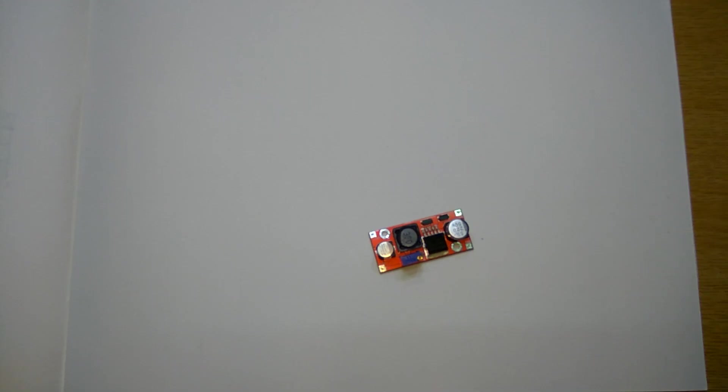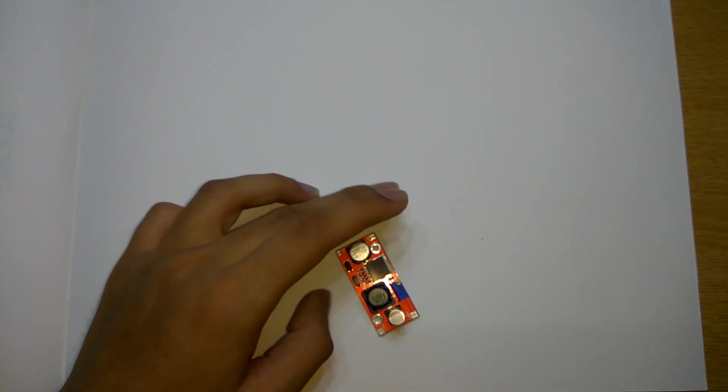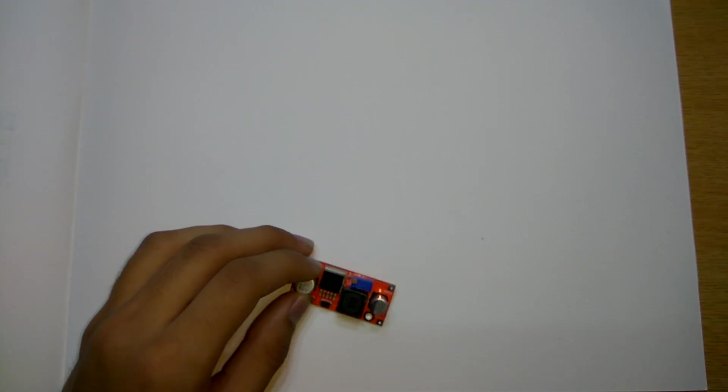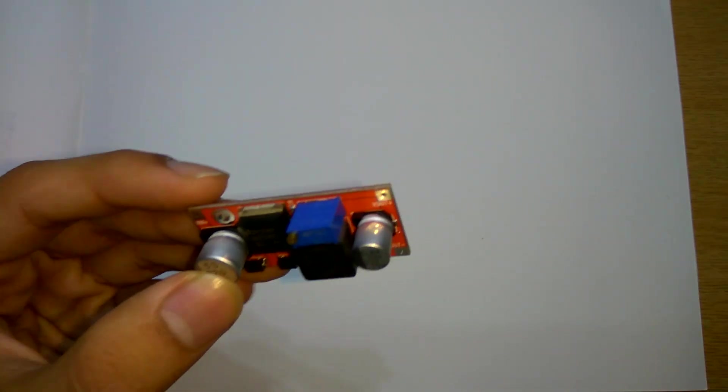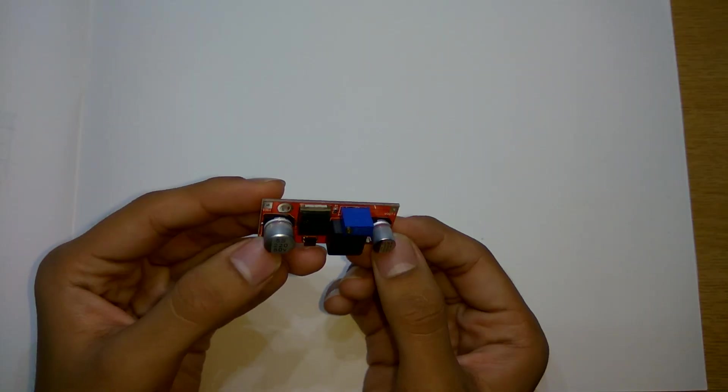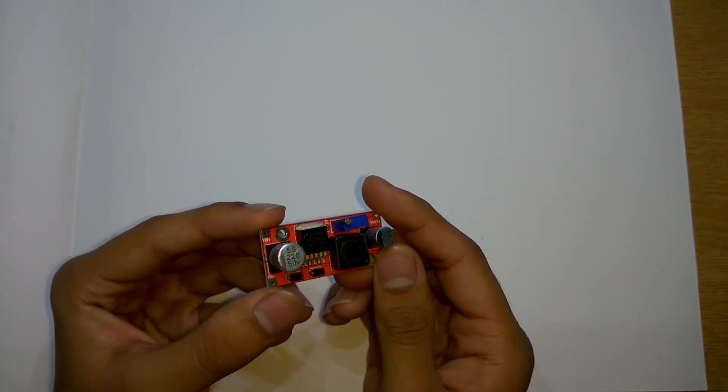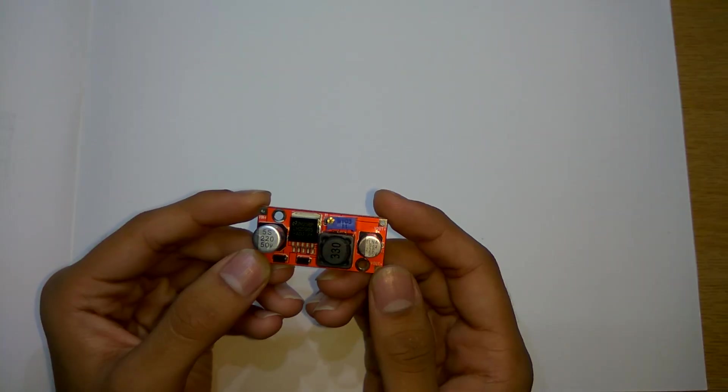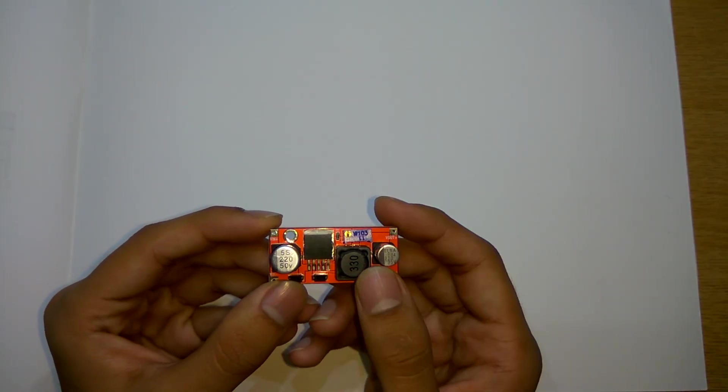Hey what is up guys, Akers here back with another video. Everyone who does electronics knows this baby - this is the DC power step down or the DC buck converter. It basically can convert your high DC into low DC according to your value, according to what you want, without any linear voltage regulator rubbish.